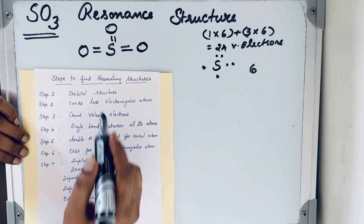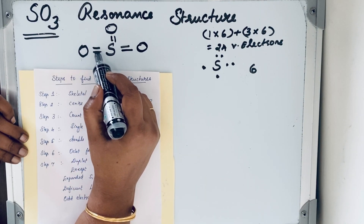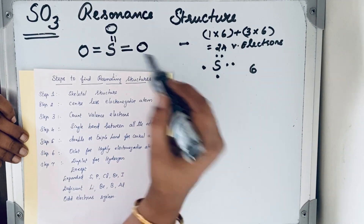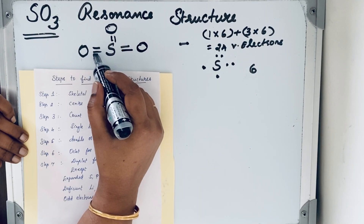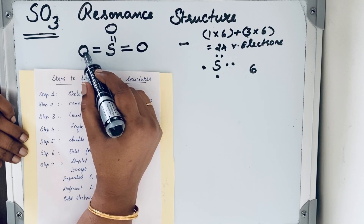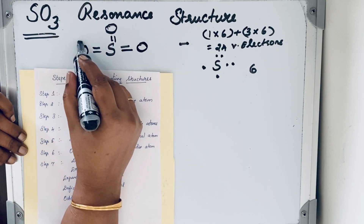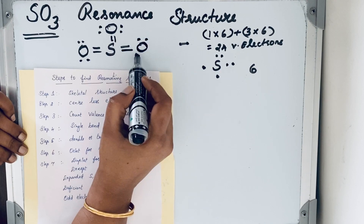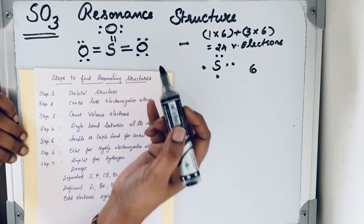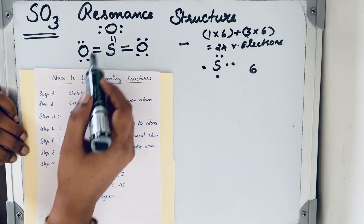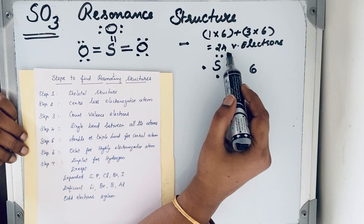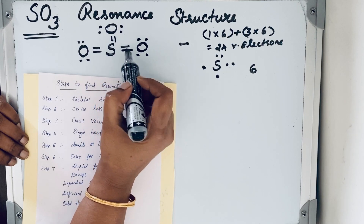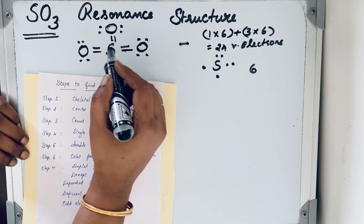Step 6: Complete the octet for the highly electronegative atom — oxygen. Each oxygen already has a double bond (4 electrons), so it needs 4 more electrons to reach octet. We draw four electrons (two lone pairs) on each oxygen. Checking: 2, 4, 6, 8, 10, 12, 14, 16, 18, 20, 22, 24 — all 24 valence electrons are accounted for.